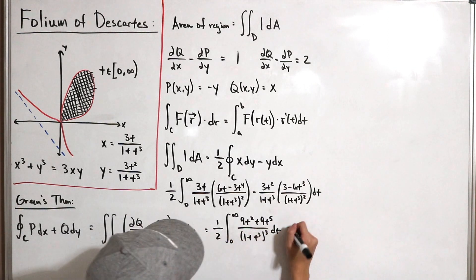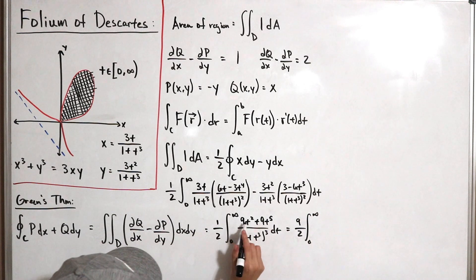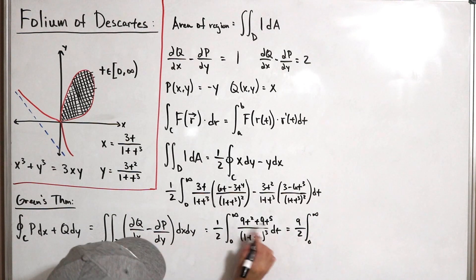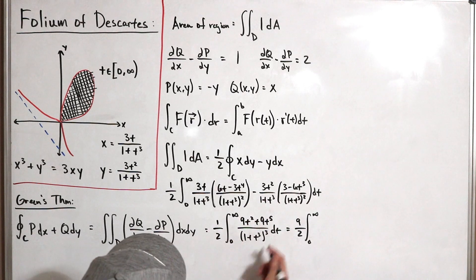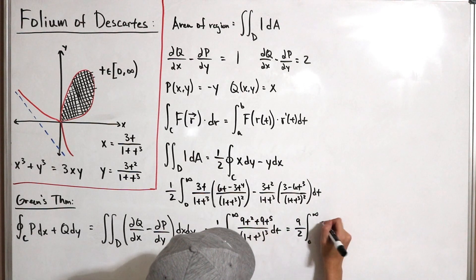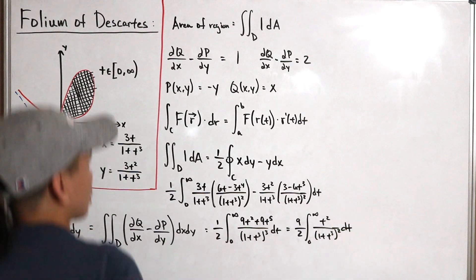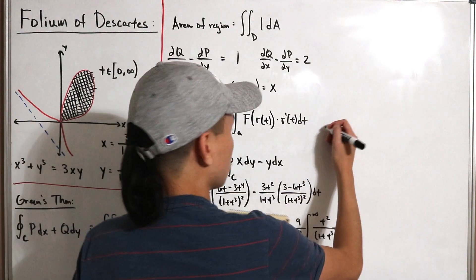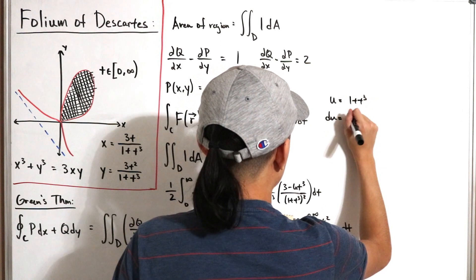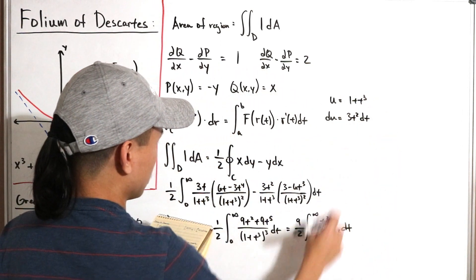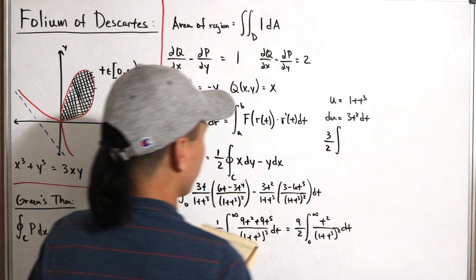Factoring out 9t², we get 9/2 times the integral from 0 to infinity of t²(1 + t³) / (1 + t³)³ dt. The (1 + t³) terms partially cancel, reducing the denominator's degree by 1, leaving t² / (1 + t³)² dt.